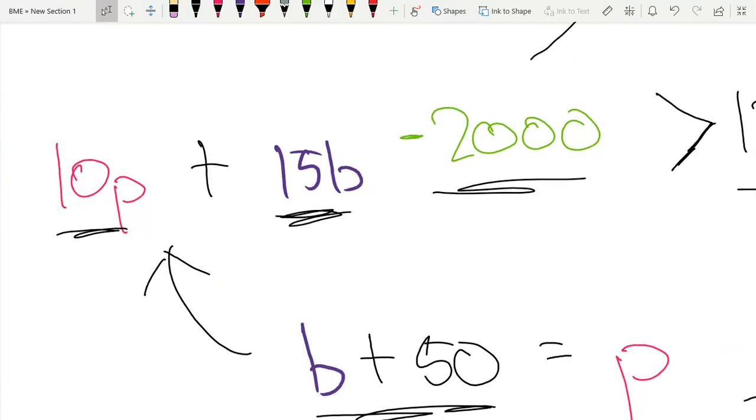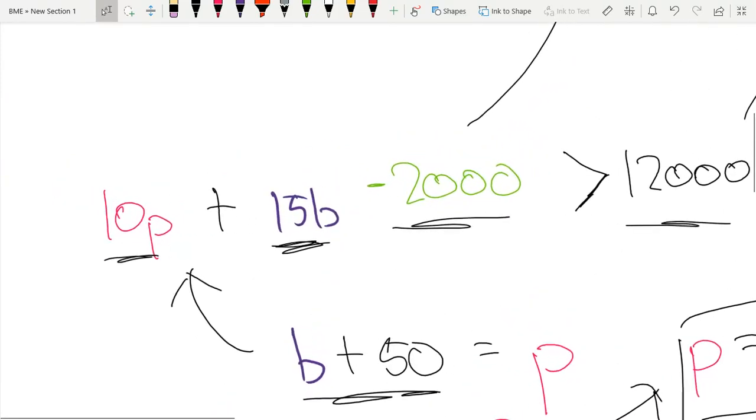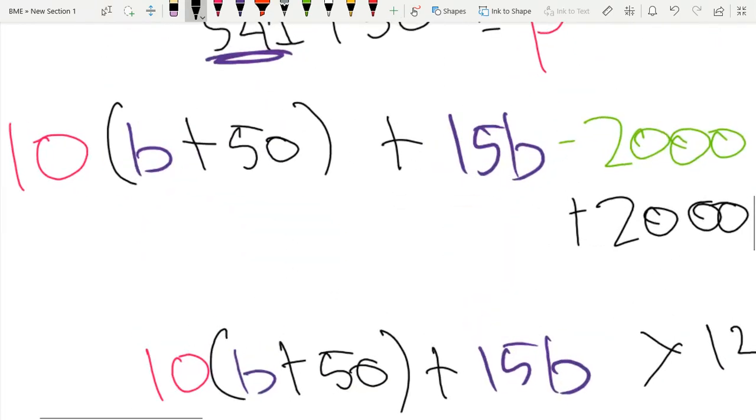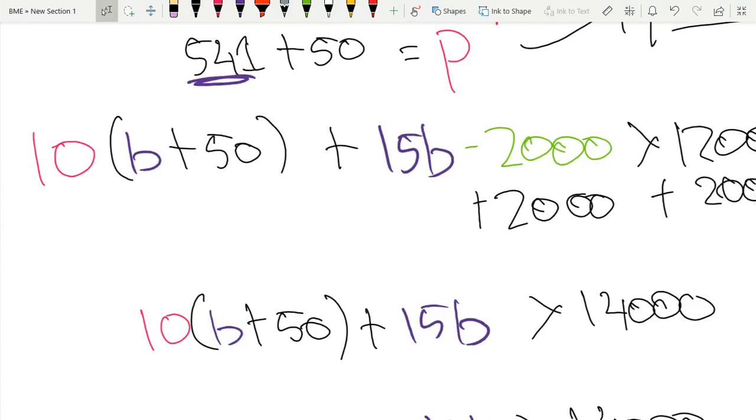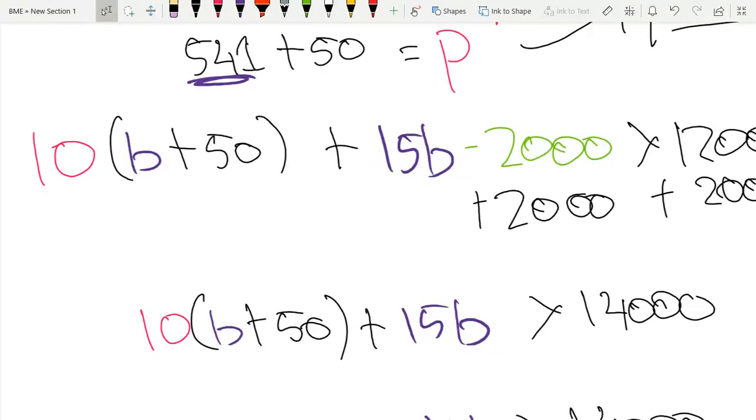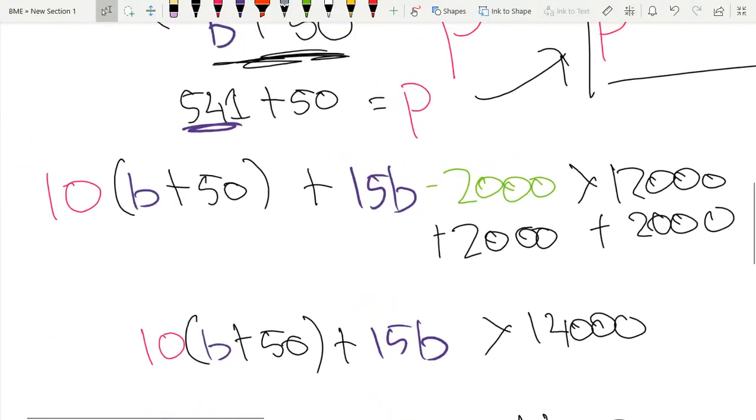So we have these two equations. And now we're going to plug this equation into here to get 10 times B plus 50 plus 15B minus 2000 is greater than 1200.